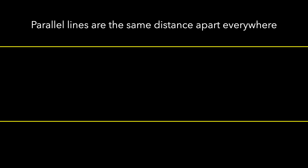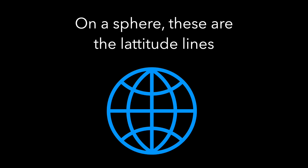So let's go back to the plane and parallel lines. Another fact about parallel lines is that they're the same distance apart everywhere. We saw this in our area experiment. So what about on the sphere? There are these latitude lines, these lines parallel to the equator.